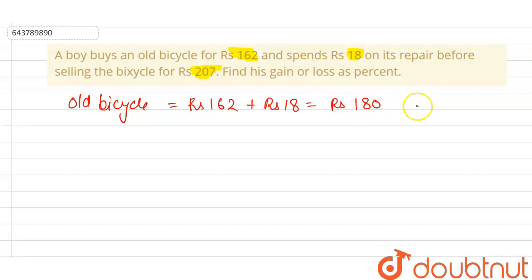And now the selling price of bicycle is rupees 207. The guy sells the bicycle for rupees 207. So there is a formula of gain percentage which is equal to gain divided by CP into 100. So we have to find the gain.